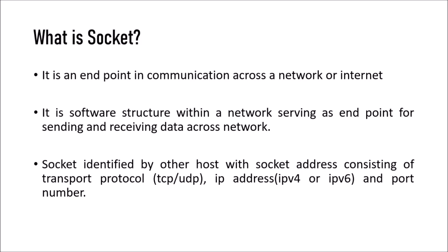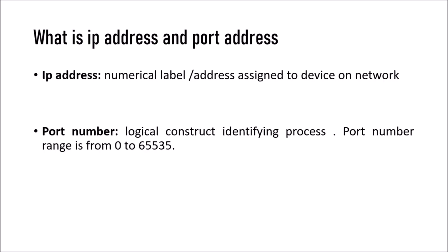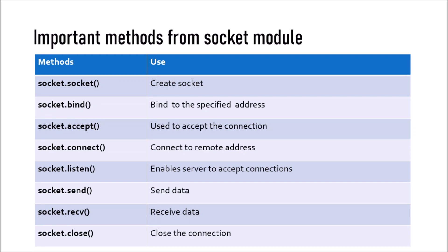A socket is identified by the host with a socket address consisting of three things: transport protocol (which may be TCP or UDP), IP address (which may be IPv4 or IPv6), and a port number. The IP address is a numerical label or address assigned to a device on the network. In IPv4 it is represented with 4 bytes, and in IPv6 it is represented by 6 bytes. The port number is a logical construct which identifies the process running on a particular server or client. The port number range is from 0 to 65535. For socket programming, we have to import the socket module, which is available in Python.